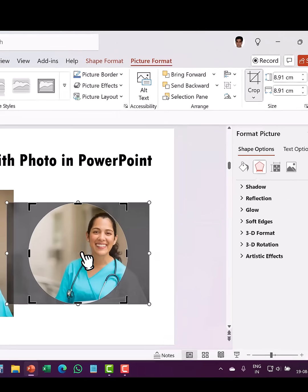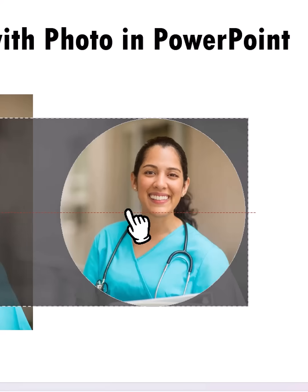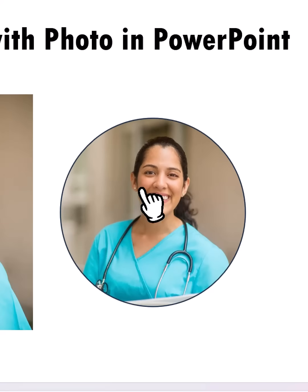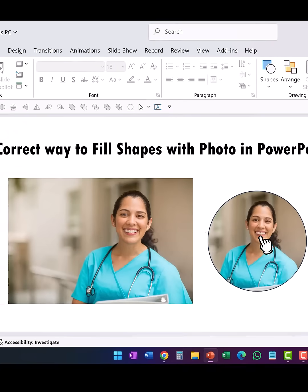To adjust the focus, select the picture, go to Picture Format, and click on the Crop tool. Now you can move the crop to suit your requirement. While this gives a decent result, the picture has been minimized to fit into the shape.